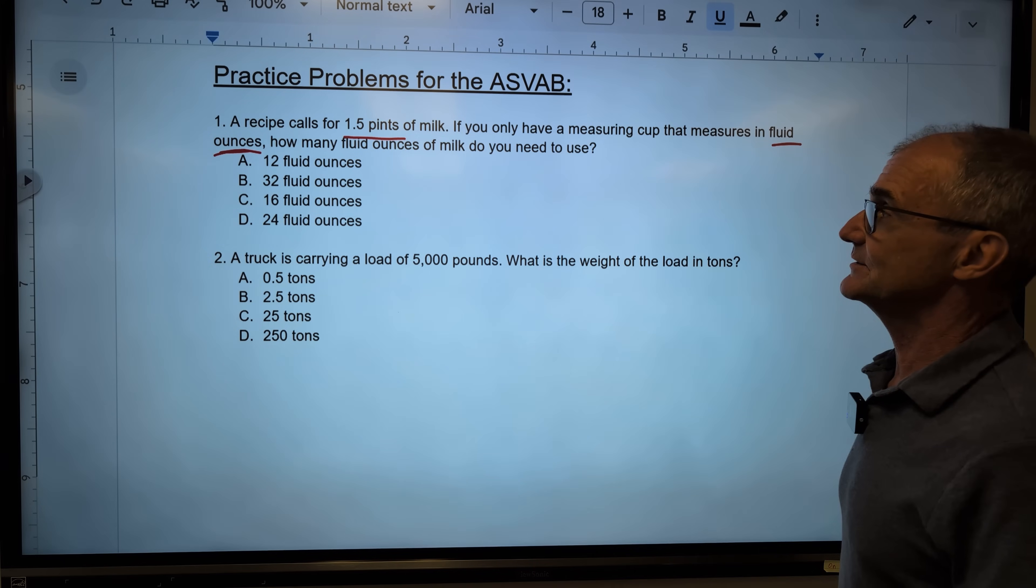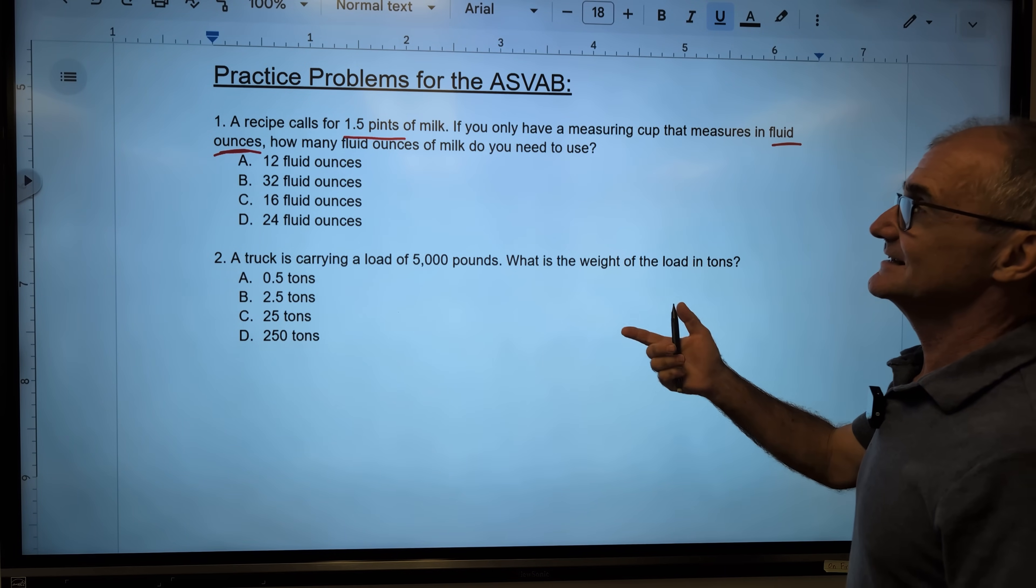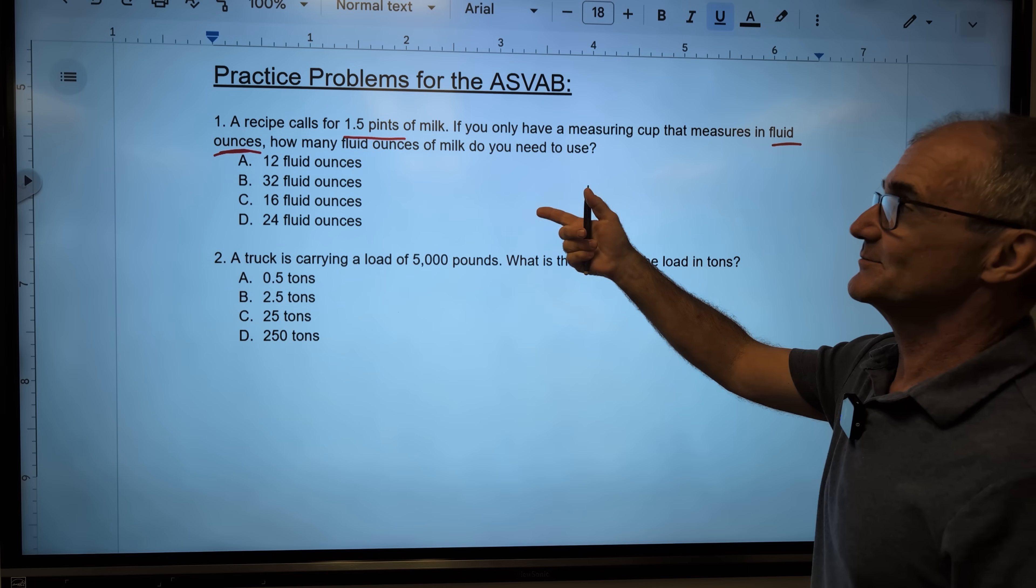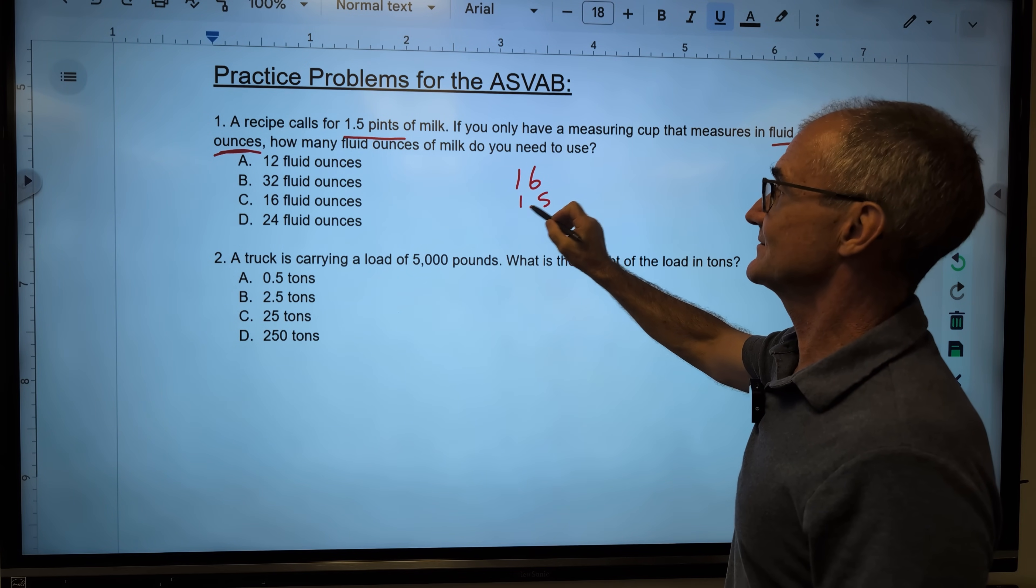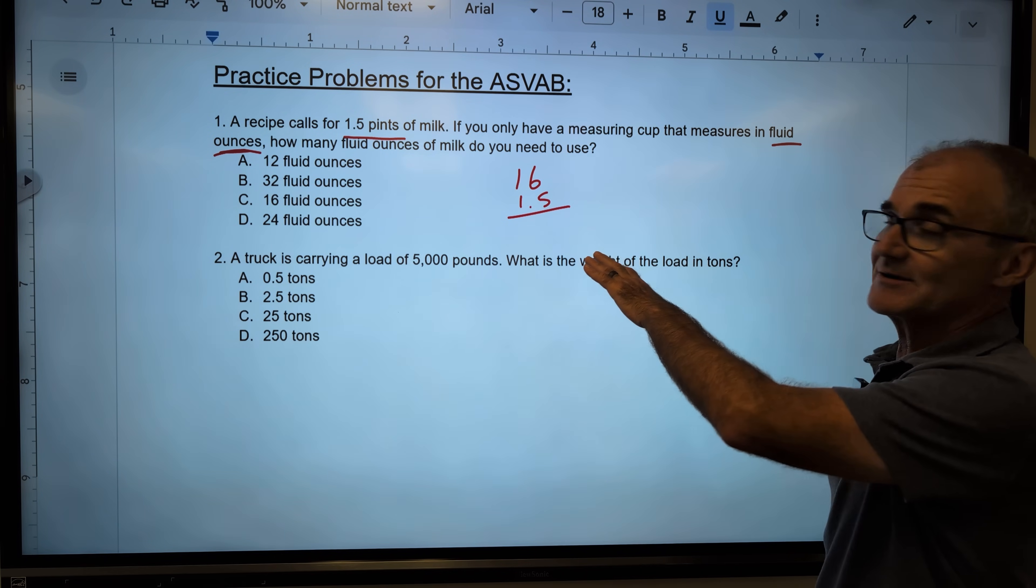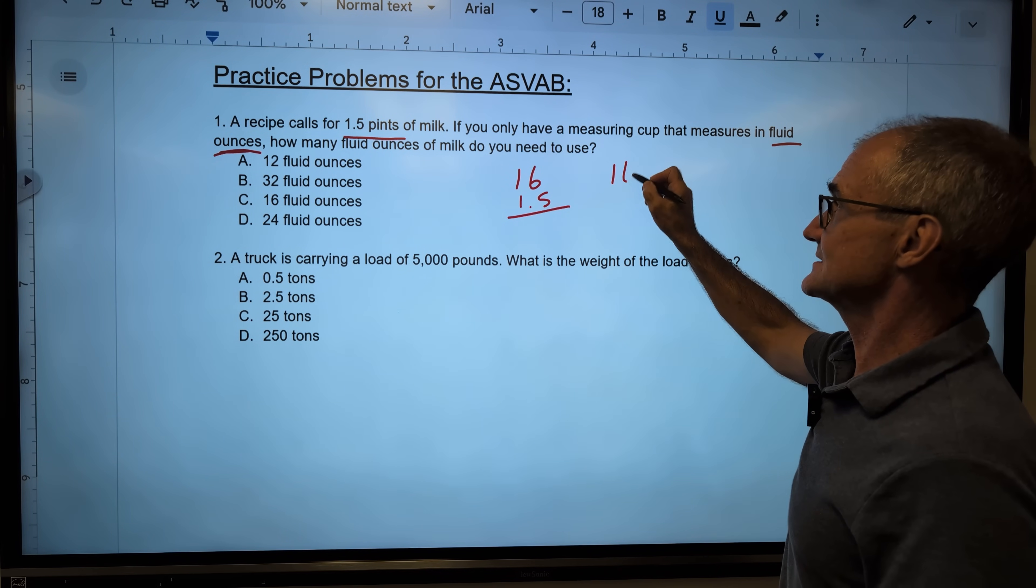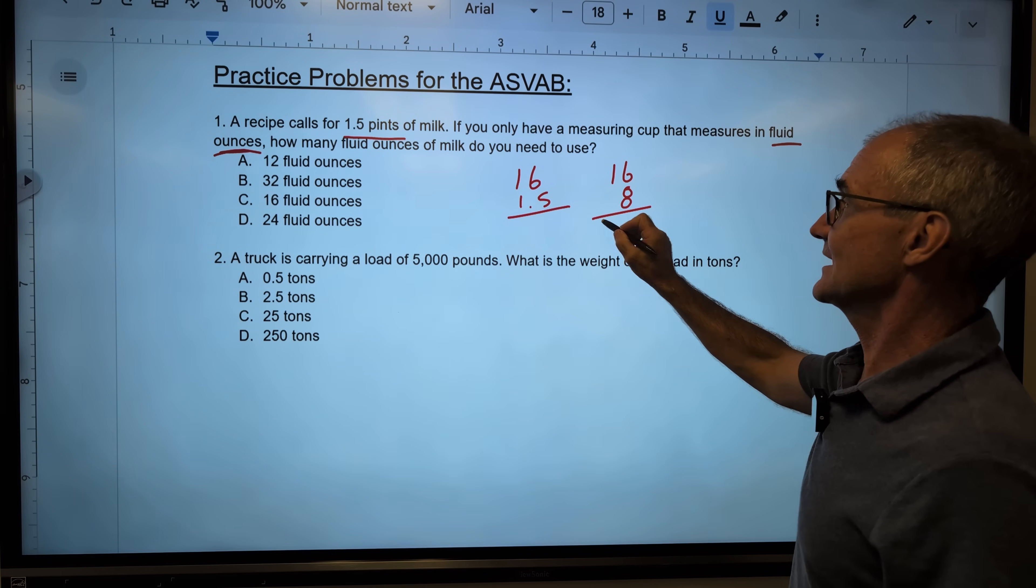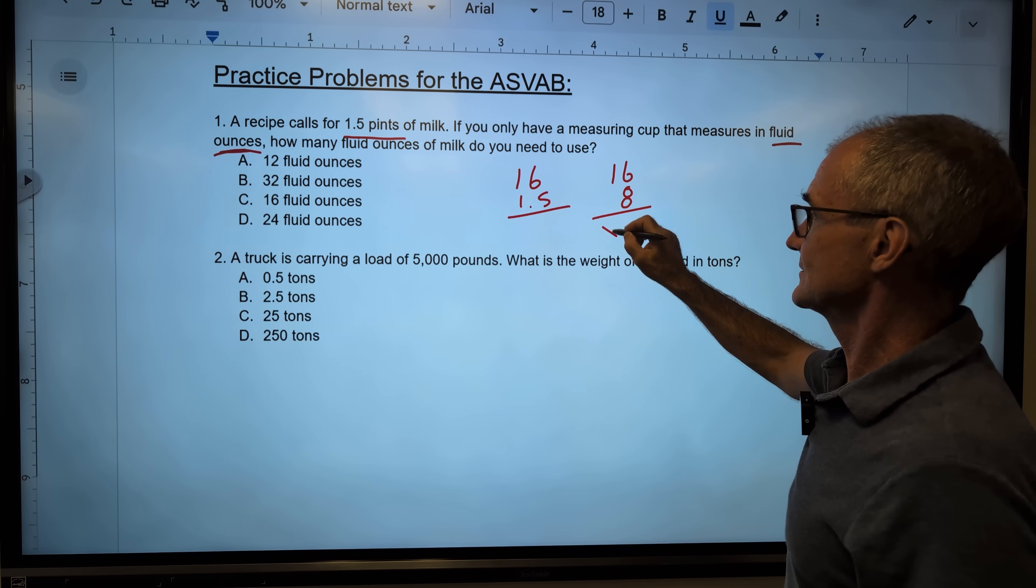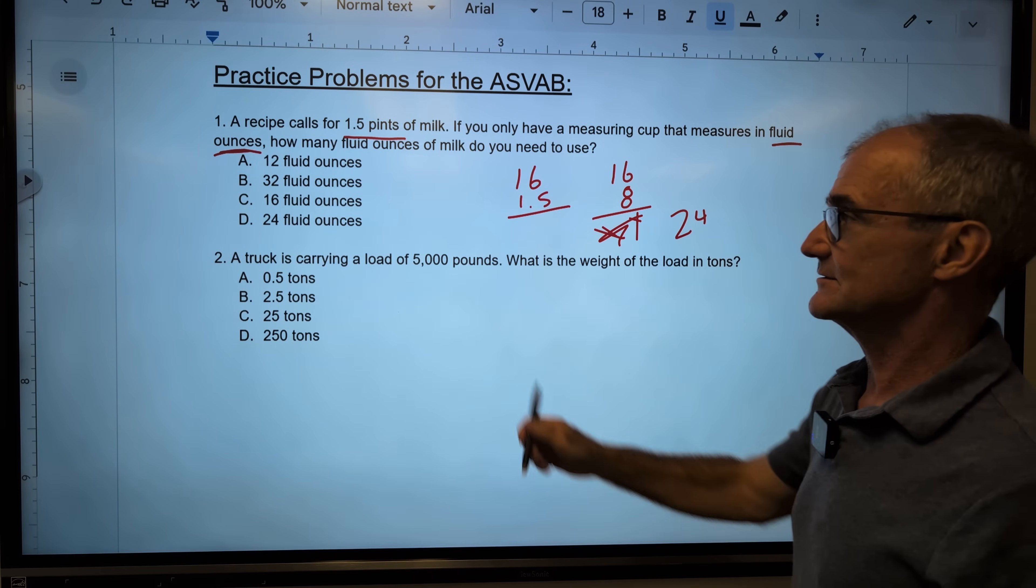So we're talking about volume. How many fluid ounces of milk do you need to use? So if you have it in your head that there are 16 ounces to the pint, then I'm going to do 16 times 1.5. These outside problems are all without a calculator. I could do this in my head by going 16 times 1 will give me 16. 0.5 times 16 or half of 16 is 8. I'm going to add those together to get 24, 24 fluid ounces.